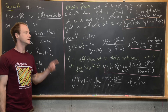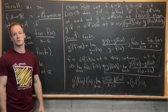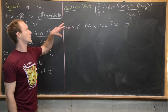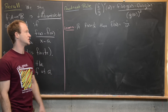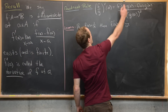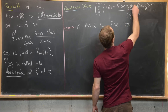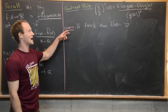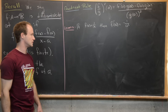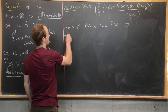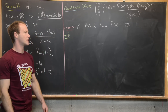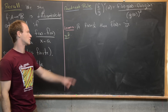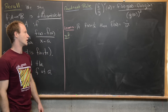Now we'll use the chain rule to prove the quotient rule: (f/g)'(a) = [f'(a)·g(a) minus f(a)·g'(a)] over g(a)². We first prove a lemma: if f(x) = 1/x, then f'(a) = −1/a². This is the power rule for exponent −1. We compute f'(a) as the limit as x→a of [1/x minus 1/a] over [x minus a]. Finding a common denominator ax in the numerator gives [a minus x] over [ax] all over [x minus a].